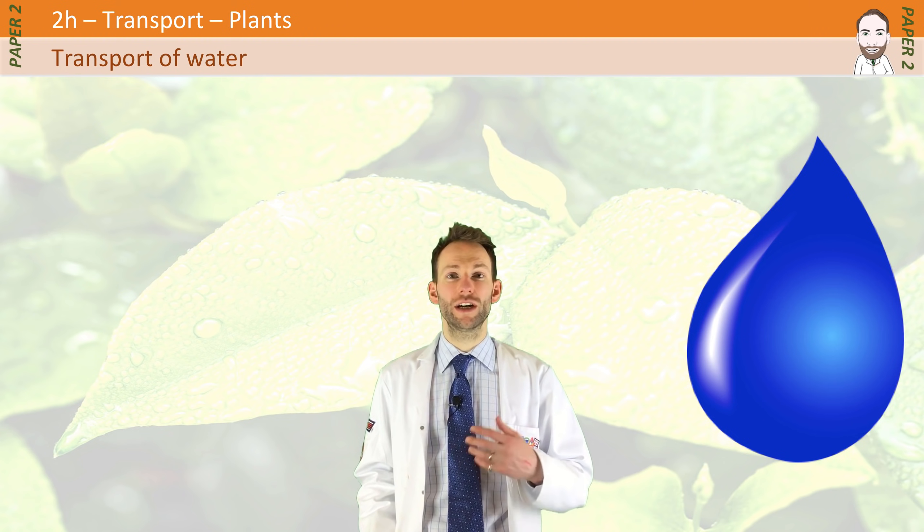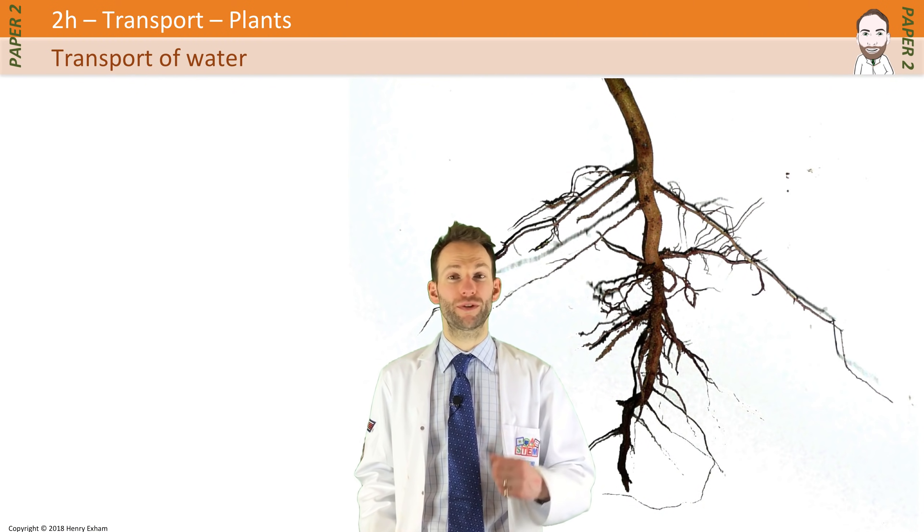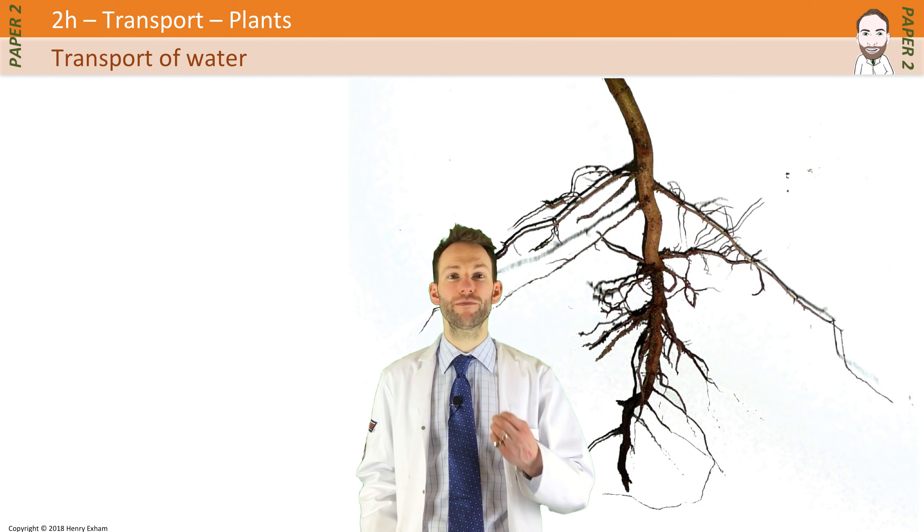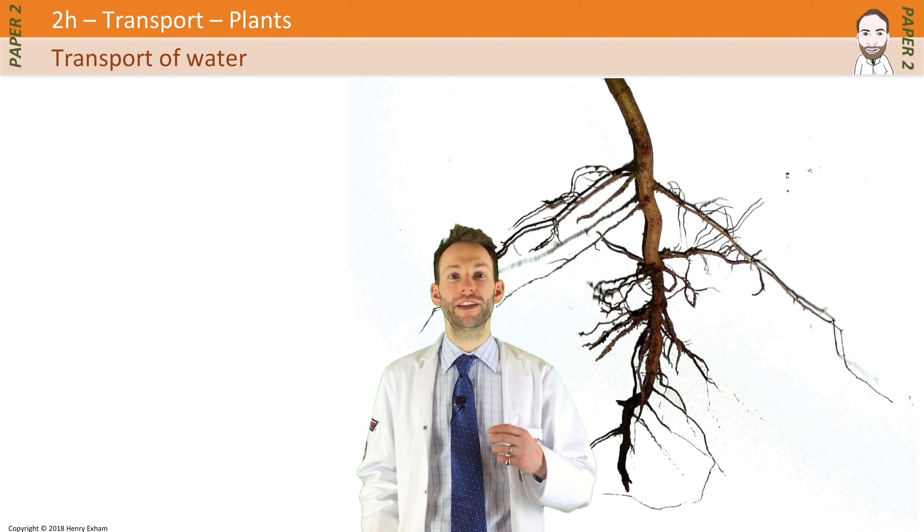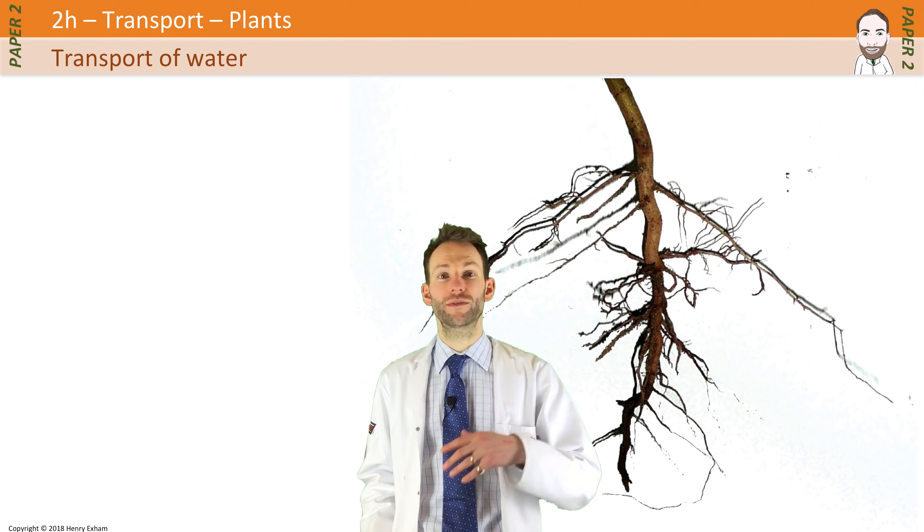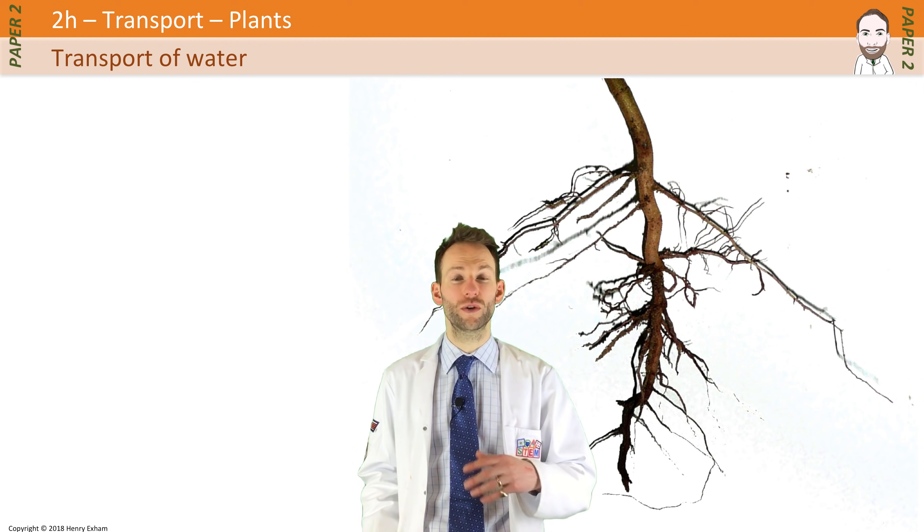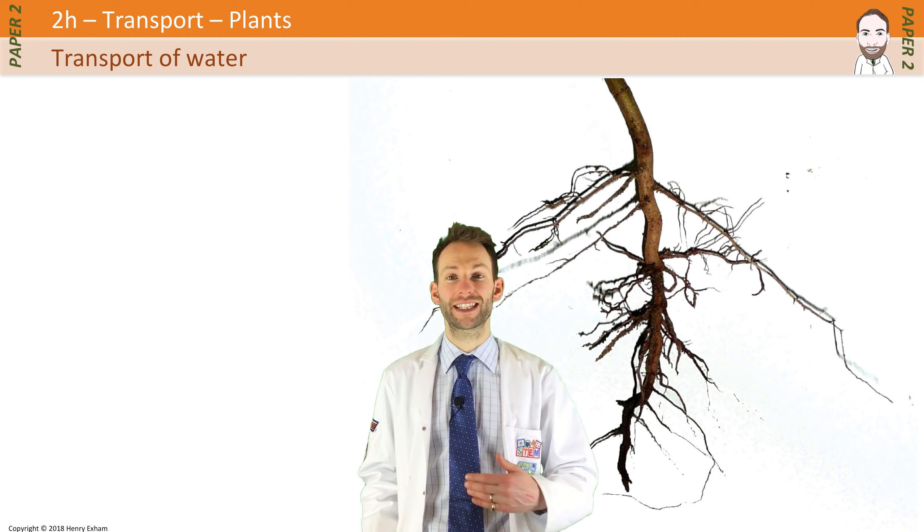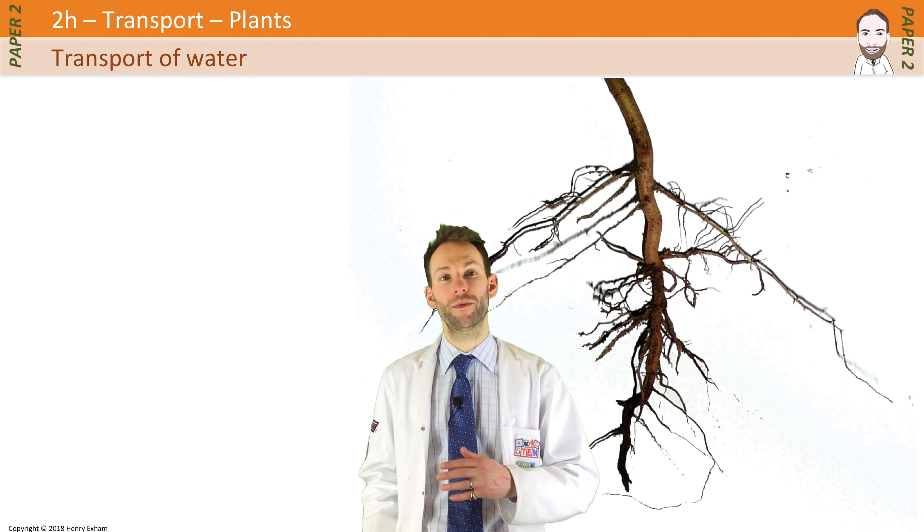Now the water is initially absorbed by the roots by a process of osmosis. This is because there is a high concentration of minerals in the root cells, and therefore water is drawn into the cells from a high water potential in the soil to a low water potential in the cells across a partially permeable membrane.